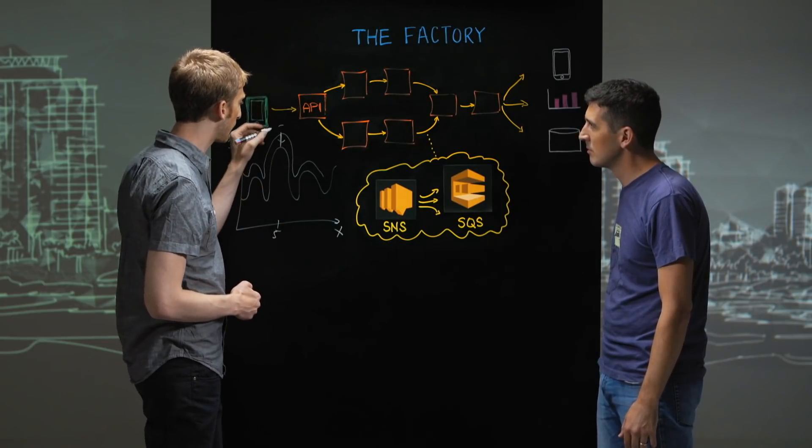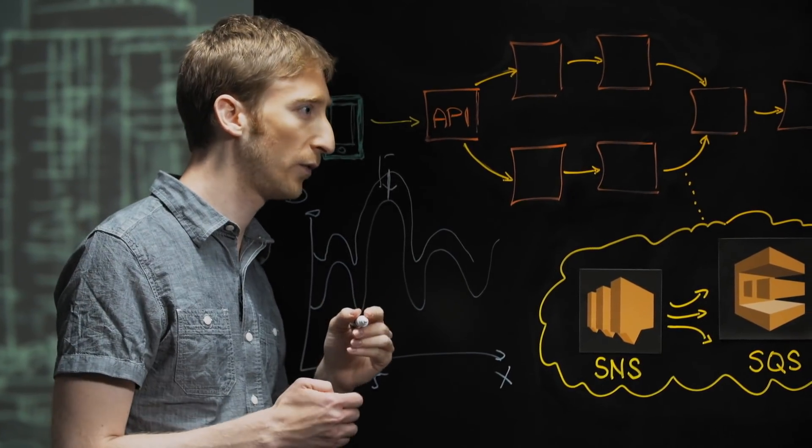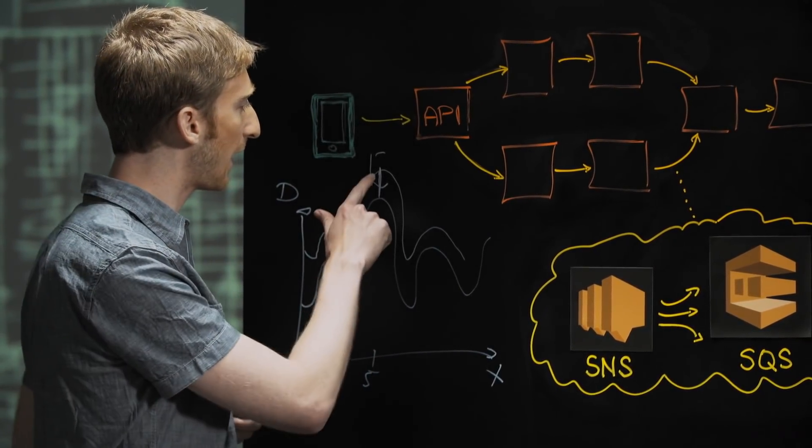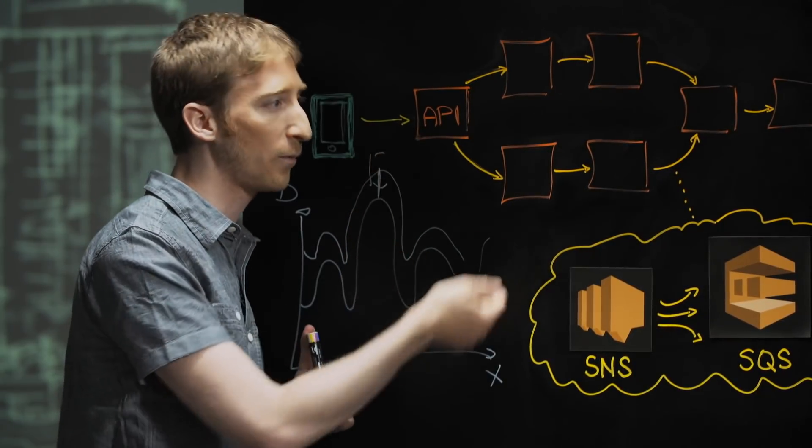but then we open a window. And in this window, we allow the number of service to go. And if we decide that we see that the demand really increases and it's out of the window, only then we add more machines.